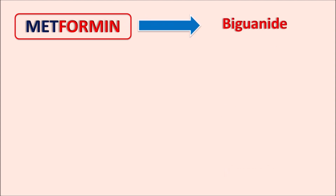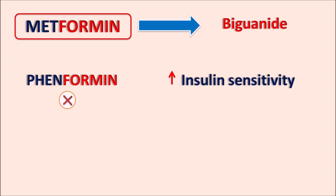Metformin chemically belongs to the class of biguanides. We have another drug within this category, fenformin, which has been withdrawn from the market, so nowadays only metformin is available. This drug has a unique action compared with other anti-diabetic agents: it increases insulin sensitivity but does not increase insulin secretion, unlike sulfonylureas. That is why metformin is the first drug indicated to treat type 2 diabetes mellitus.